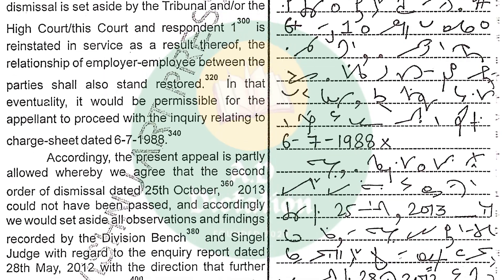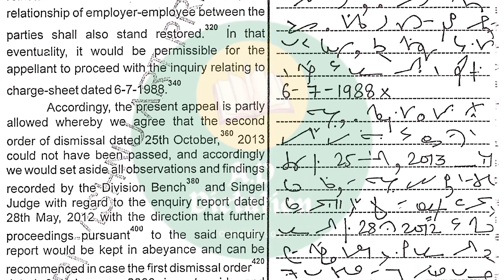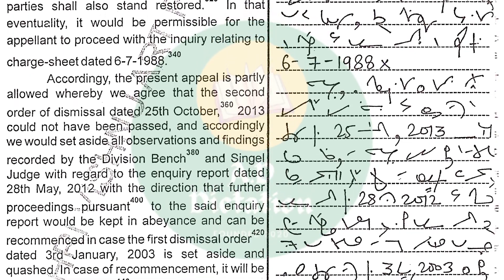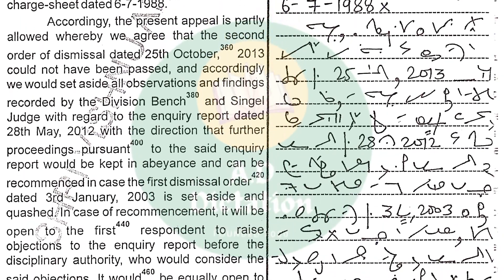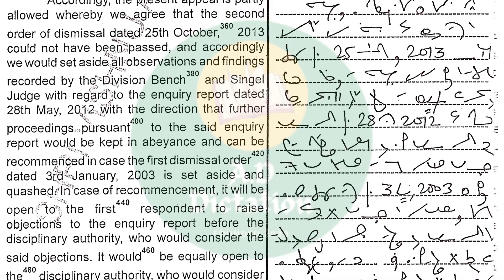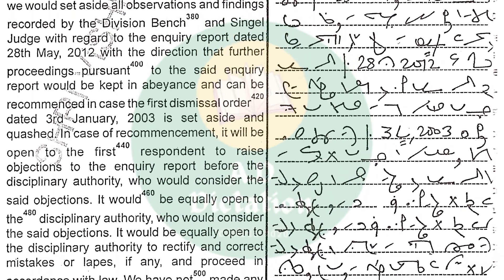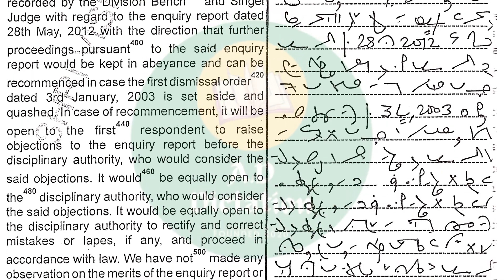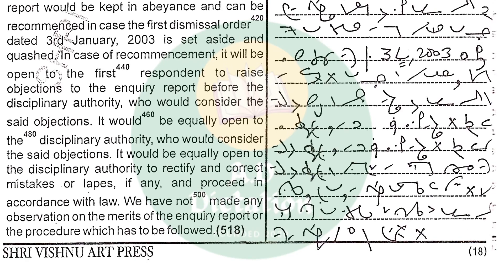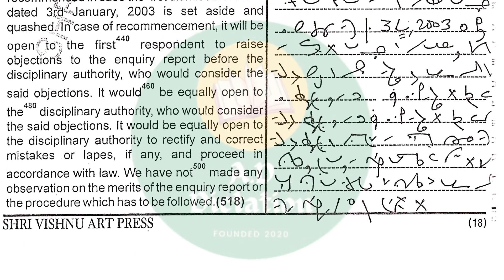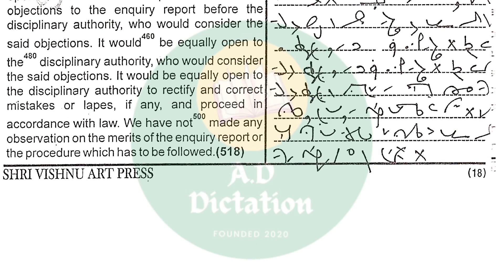Accordingly, the present appeal is partly allowed whereby we agree that the second order of dismissal dated 25 October 2013 could not have been passed, and accordingly we would set aside all observations and findings recorded by the division bench and single judge with regard to the inquiry report dated 28 May 2012, with the direction that further proceedings pursuant to the said inquiry report would be kept in abeyance and can be recommenced in case the first dismissal order dated 3 January 2003 is set aside. In case of recommencement, it will be open to the first respondent to raise objections to the inquiry report before the disciplinary authority, who would consider the said objections. It would be equally open to the disciplinary authority to rectify and correct mistakes or lapses, if any, and proceed in accordance with law. We have not made any observation on the merits of the inquiry report or the procedure which has to be followed.